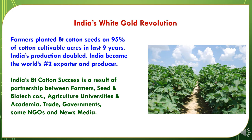In our country, BT cotton is contributing about 95 percent of the total cotton cultivable area. Based on the last nine years, India's production has been doubled with BT cotton and India became the world number two exporter and producer after China. India's BT cotton success is a result of partnership between farmers, seed and biotech companies, agriculture universities, government policies, some NGOs, and news media.